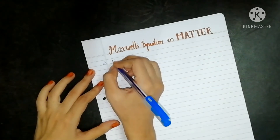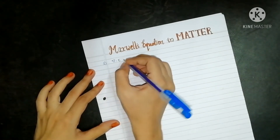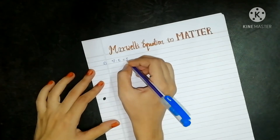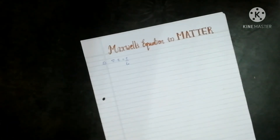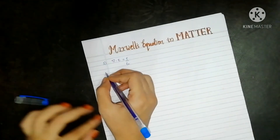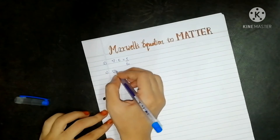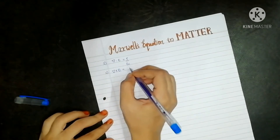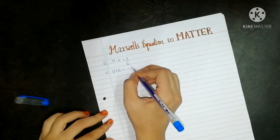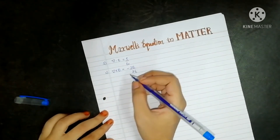The first Maxwell equation is del dot E is equal to rho by epsilon naught. The second equation is del cross E is equal to minus dou B by dou t.